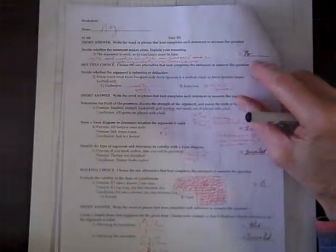We're doing Unit 1-D. First question. We've got to decide whether the statement makes sense. The argument is weak, so its conclusion must be false. Well, no, it doesn't make sense.